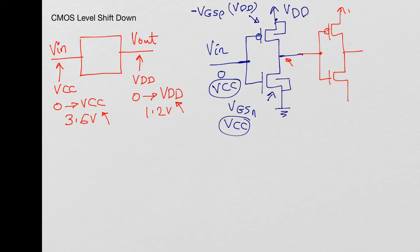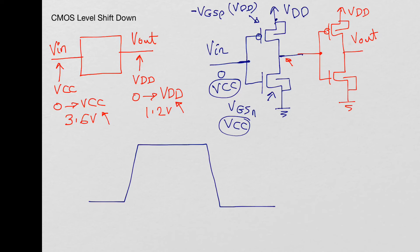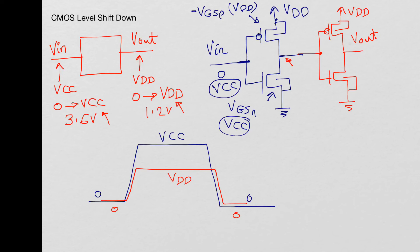Now we use low voltage devices and construct a second inverter powered by VDD and ground. This gives us V_out. If VIN looks like this — 0, VCC, 0 — then V_out, with a small delay through the two inverters, would be 0, VDD, 0. This is how we level shift down.